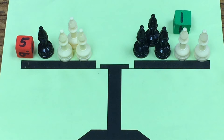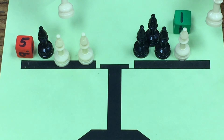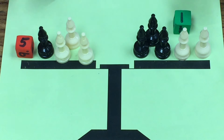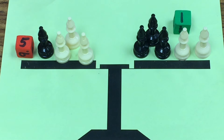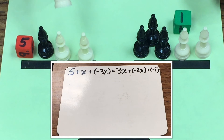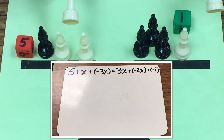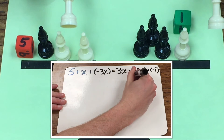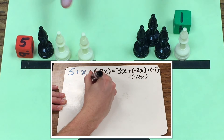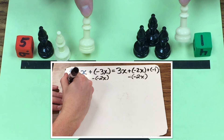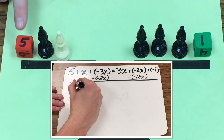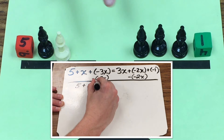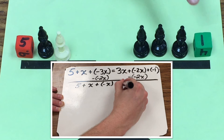I'm going to go back to the legal move of removing the same thing from both sides. I see a white pawn on both sides, so I'm going to remove those. Think of it like an actual scale — if you remove the same weight from both sides it stays balanced. I remove one white pawn from both sides, then another white pawn from both sides. Now I'm left with 5 plus x plus the opposite of x equals 3x, which is the same as 3x plus negative 1.